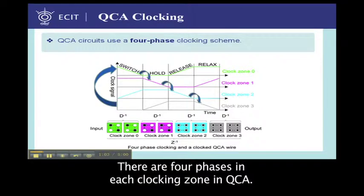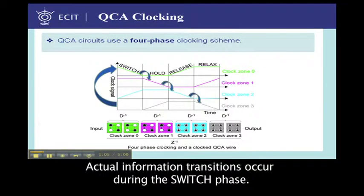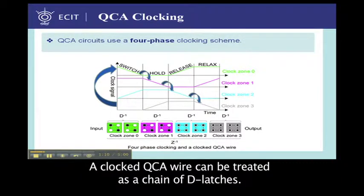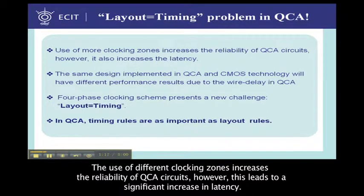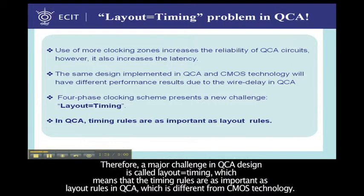There are four phases in each clocking zone in QCA. Actual information transitions occur during the switch phase. A clocked QCA wire can be treated as a chain of D-latches. The use of different clocking zones increases the reliability of QCA circuits. However, this leads to a significant increase in latency. Therefore, a major challenge in QCA design is called layout equals timing, which means that timing rules are as important as layout rules in QCA, which is different from CMOS technology.